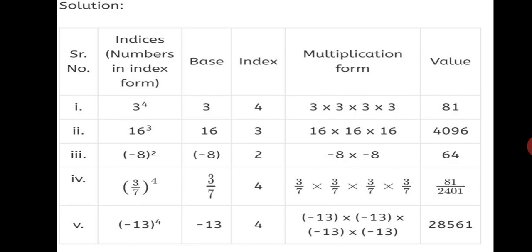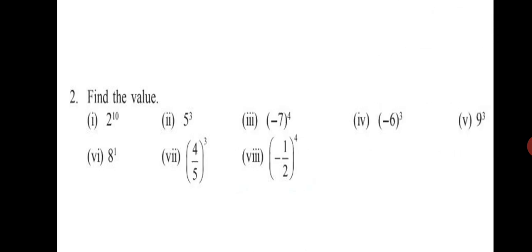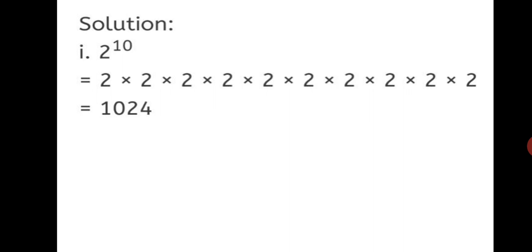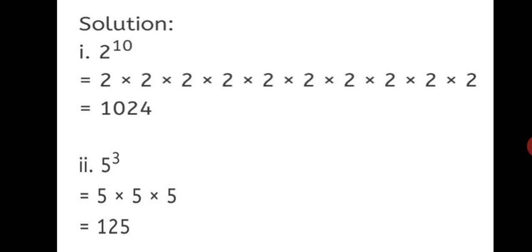Now let us go to Question 2 — Find the value. The indices are given and you have to find the value. First sum: 2 raised to 10 — multiply 2 by itself 10 times — gives 1024. Second sum: 5 raised to the power of 3 — multiply 5 by itself 3 times: 5 fives are 25, 25 fives are 125. You just have to multiply the base as many times as the index is given.